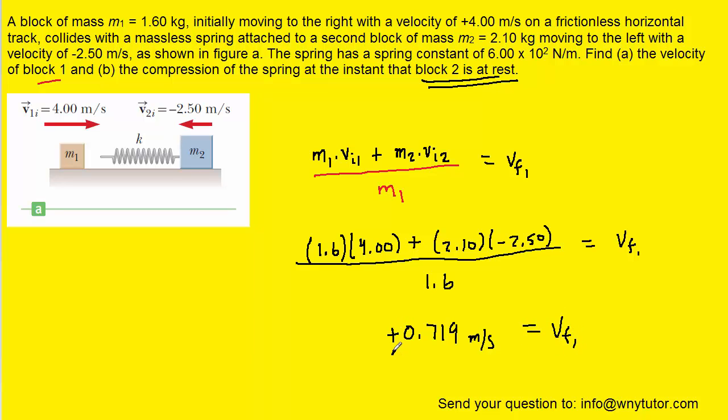And the fact that we had a positive value for that final velocity indicates that block one will be moving to the right after the collision. And so there's the proper direction and the proper magnitude of the final velocity of block one. Those are the answers to part A.